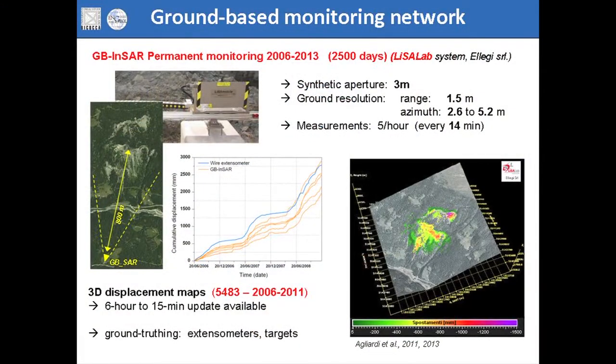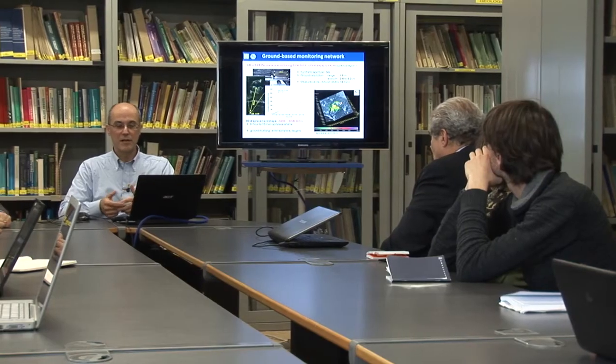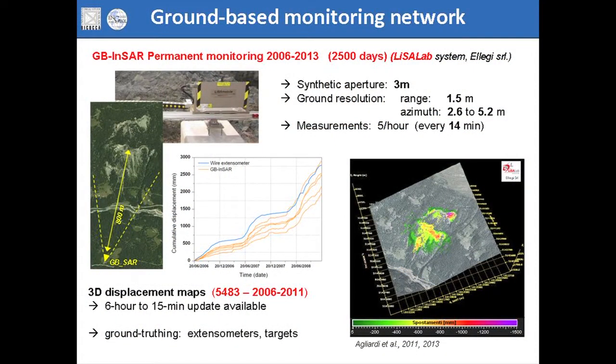Since 2006, a ground-based SAR has been operating continuously at an average distance of about 800 meters from the slope, collecting data continuously. Up to now we have more than 2,500 days of data. We worked especially on the time interval between 2006 and 2011, analyzing about 5,500 interferometric maps. Ground truthing is based on GPS stations, topographic measurements by total station, and extensometer data.